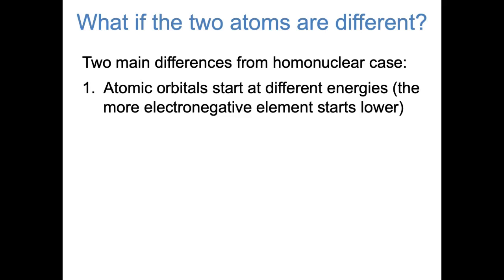Electronegativity is basically how strongly an element pulls on the electrons in a bond. Excluding the noble gases, electronegativity increases as you move to the upper right corner of the periodic table, so fluorine is the most electronegative element. When an element is electronegative and it pulls strongly on electrons, it's putting those electrons in more stable or lower energy orbitals.